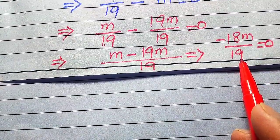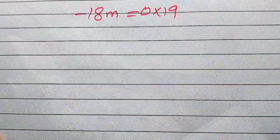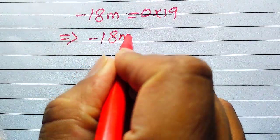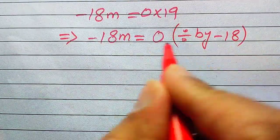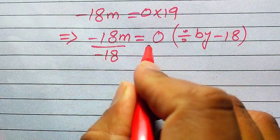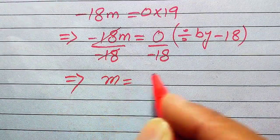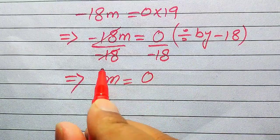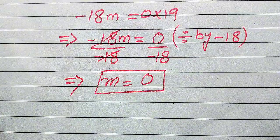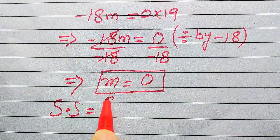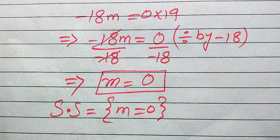We move 19 to the right-hand side, giving minus 18m equals 0 times 19, which equals 0. Dividing both sides by minus 18, the minus 18 terms cancel on the left, giving m equals 0 divided by minus 18, which equals 0. So m equals 0 is the only root, confirming the result from Method 1. Since we already verified m equals 0 satisfies the original equation, the solution set is m equals 0. Thank you for watching — please subscribe for more videos.